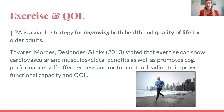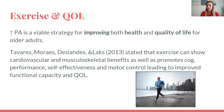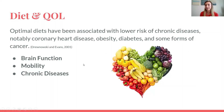Exercise and quality of life: increased physical activity is a viable strategy to improve both health and quality of life for older adults. A study by Tavers et al. in 2013 showed that exercise can provide cardiovascular and musculoskeletal benefits, as well as promote increased cognitive performance, self-effectiveness, and motor control, leading to improved functional capacity and quality of life. Optimal diets have been associated with lower risk of chronic diseases, especially coronary heart disease, obesity, diabetes, and some forms of cancer, and can help improve brain function, mobility, and decrease chances of those chronic diseases.